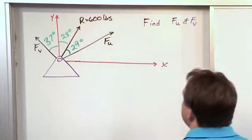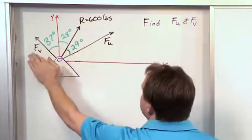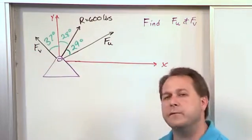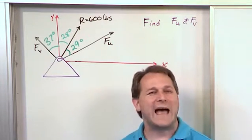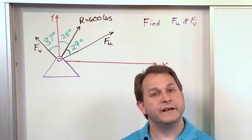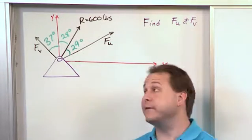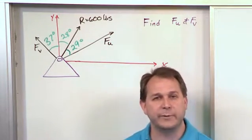And what we're trying to find is what is FU and what is FV. So again, we're given some information, especially we're given some information about the resultant, and we're asked, what must FU and FV be such that when they add together, they give us the resultant on the board, which is 600 pounds.